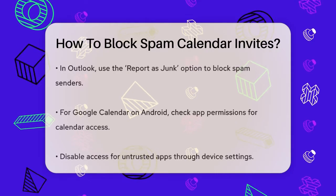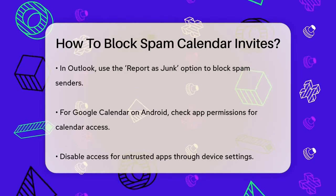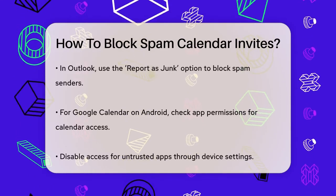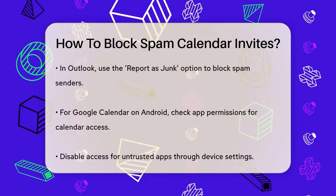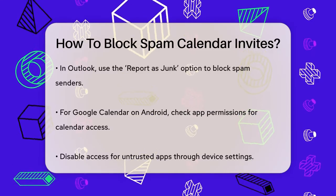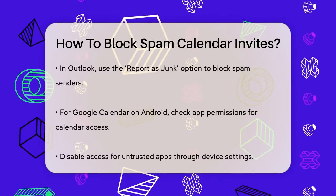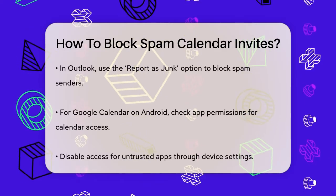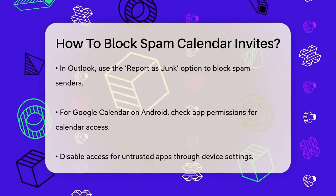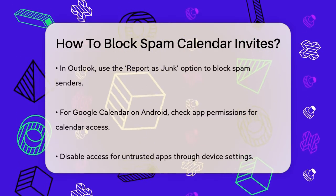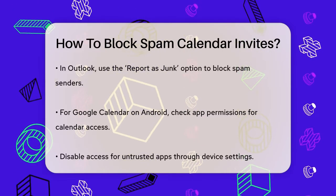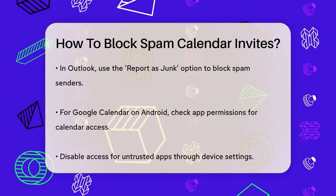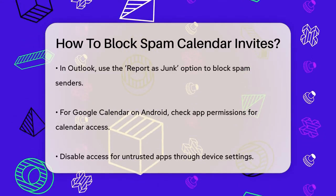When you do get a spam invite, don't click on any links within it. Instead, report it as junk or spam. In Outlook, you can do this by opening the spam invite, looking for the option to report as junk or report as spam, and then right-clicking on the invite to select Junk, Block Sender. This will prevent future invites from the same email address.